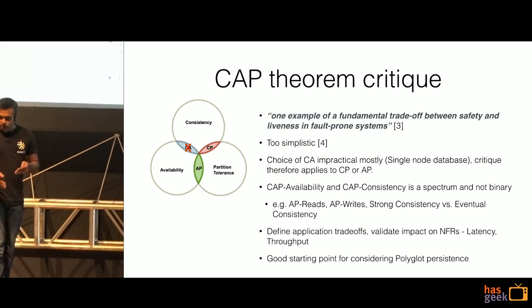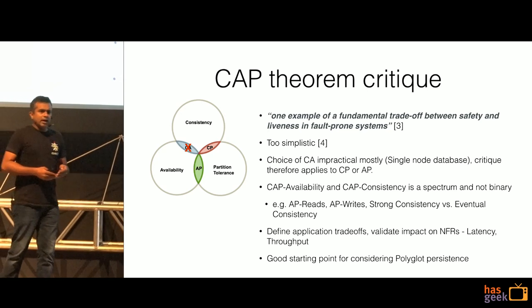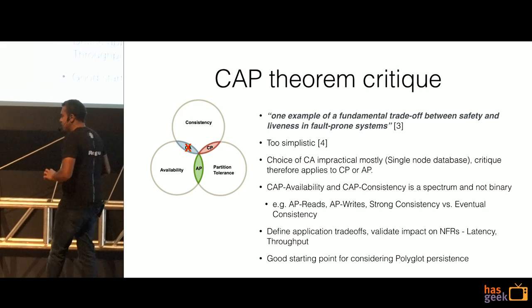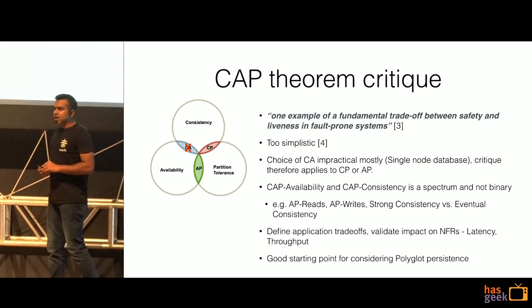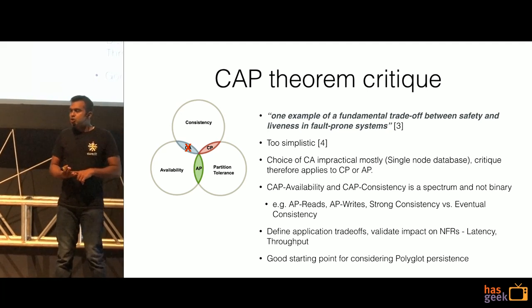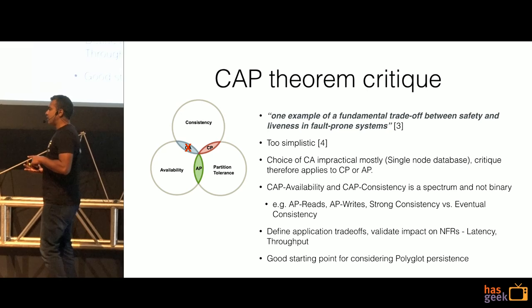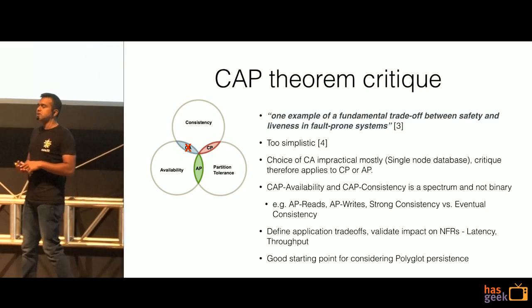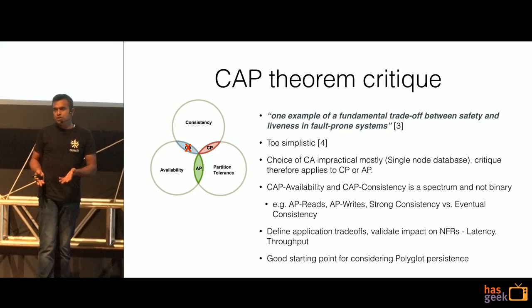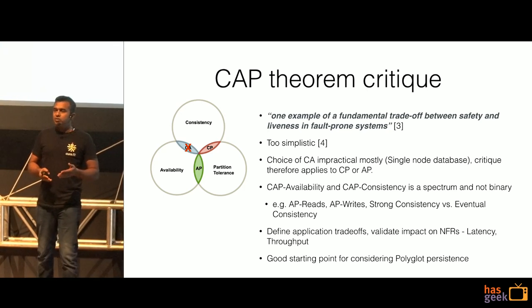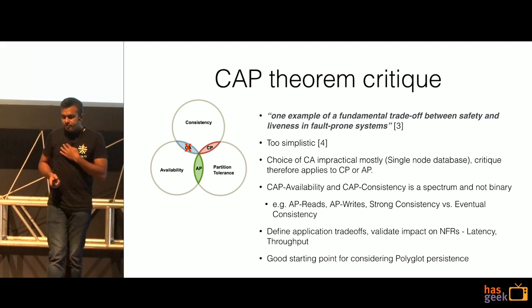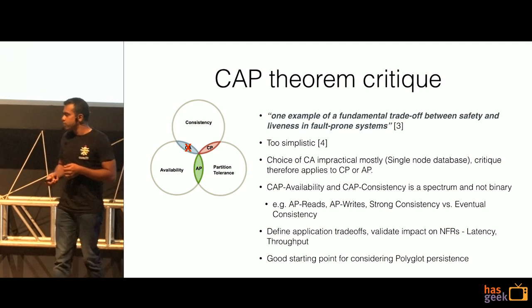You define your application trade-offs and validate the impact on your NFRs — latency, for example. Going back to the Flipkart example: on offers, we chose to have availability over consistency, and we built systems for that. And that's perfectly all right — you will define those trade-offs when you're trying to predict them using CAP. That also serves as a good starting point for considering polyglot persistence.